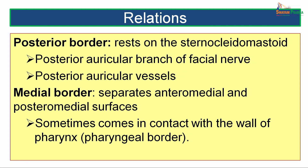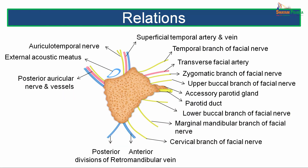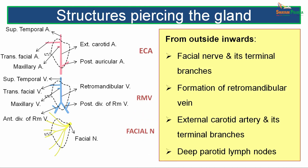The posterior border rests on the sternocleidomastoid and is related to the posterior auricular branch of the facial nerve and the posterior auricular vessels. The medial border separates the anteromedial surfaces and sometimes comes in contact with the wall of the pharynx, also called the pharyngeal border.